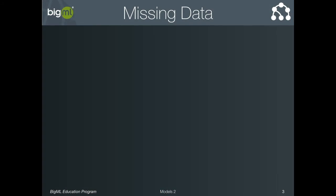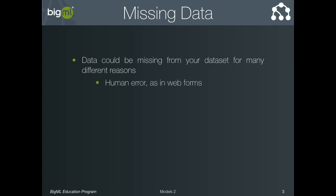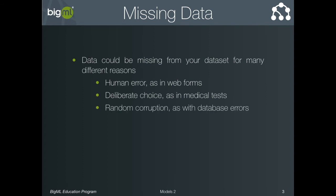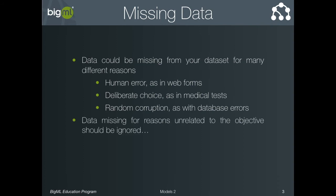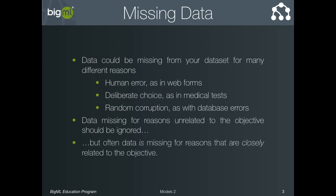The other option we'll talk about in this video is missing splits. There may be many reasons why a field value is missing for a particular instance in your training data. Maybe each instance is a customer survey and the customer forgot to fill out some fields, or maybe each instance is a medical patient and the doctor decided that some test was not necessary. In some cases, if the value for a field is missing, it may be useful information—if a doctor decides not to give a patient a certain test, the patient is probably less likely to have a disease for which that test is relevant. This isn't always true; sometimes data is missing due to a database error or corrupt data file. But in cases where missing values have meaning, it is useful to train models able to capture that information.